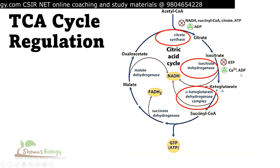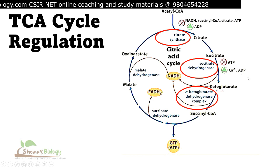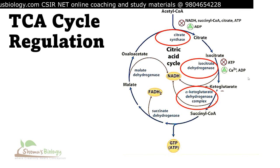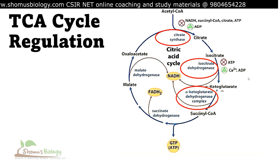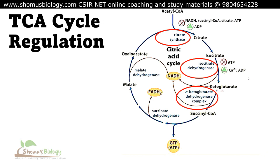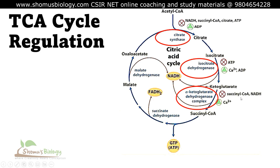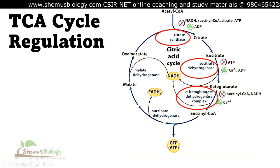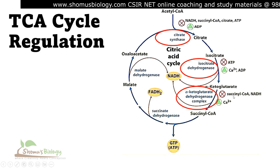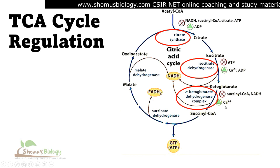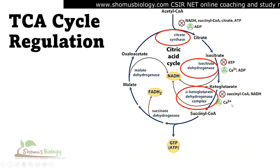For isocitrate dehydrogenase regulation: ATP inhibits the enzyme, while ADP positively influences it. The presence of calcium ions also positively influences isocitrate dehydrogenase activity. For the alpha-ketoglutarate dehydrogenase complex: succinyl-CoA, as a downstream product, inhibits the enzyme; NADH, also a product, inhibits the complex; while calcium ions positively influence the alpha-ketoglutarate dehydrogenase complex.